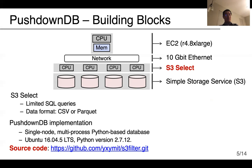PushdownDB is deployed on AWS and has a few major building blocks. The compute node is a single EC2 virtual machine with R4 8XLarge instance type, which has 32 virtual CPUs, 244 gigabytes of main memory, and 10 gigabit ethernet. We use AWS S3 as the storage layer. S3 recently announced a new feature called S3 Select, which supports limited SQL queries on data of CSV and Parquet format. The computation happens near S3 and is charged based on the amount of data scanned and returned. PushdownDB is implemented using Python, and the source code is open and available on GitHub.